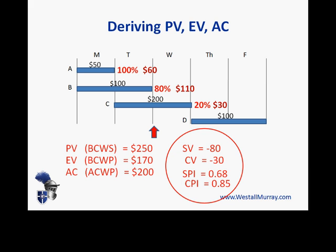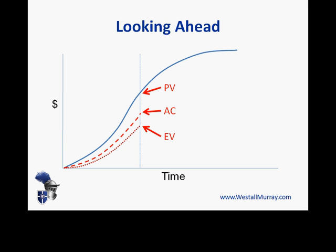So in Part 3, we'll be looking ahead to see what all of this information means for our anticipated end of project — are we going to come in over or under budget? Are we going to be late or early? We know what our budget at completion is, because we've budgeted our project. Incidentally, budget at completion is the same thing as the planned value for your entire project. In our next video, we'll calculate and track forward costs and earned value to see where we're going to end up.